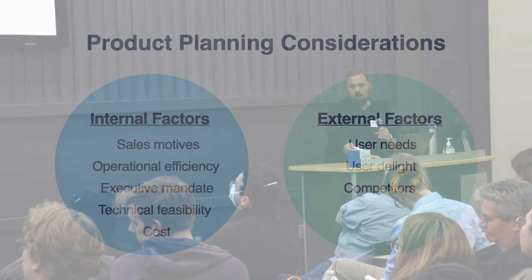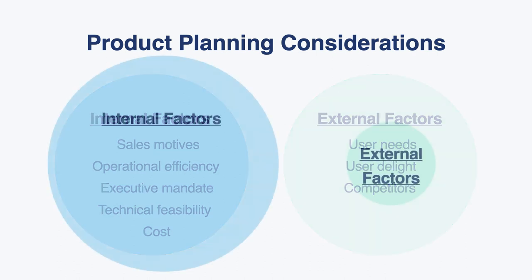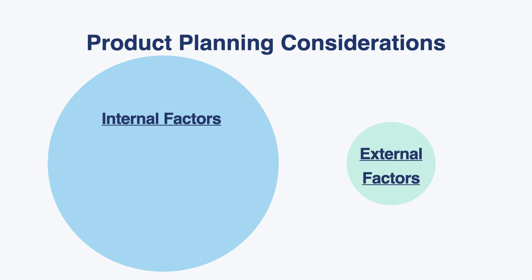All of these on some level are valid motives — I'm not saying they aren't worth considering. But they're all internal factors that users may or may not care about. Looking at external factors — what do users actually need, what do they want, what excites and delights them, and what are competitors doing? Generally, internal factors seem to hold the trump card, and product organizations build what makes sense internally without sufficient consultation from users and customers.